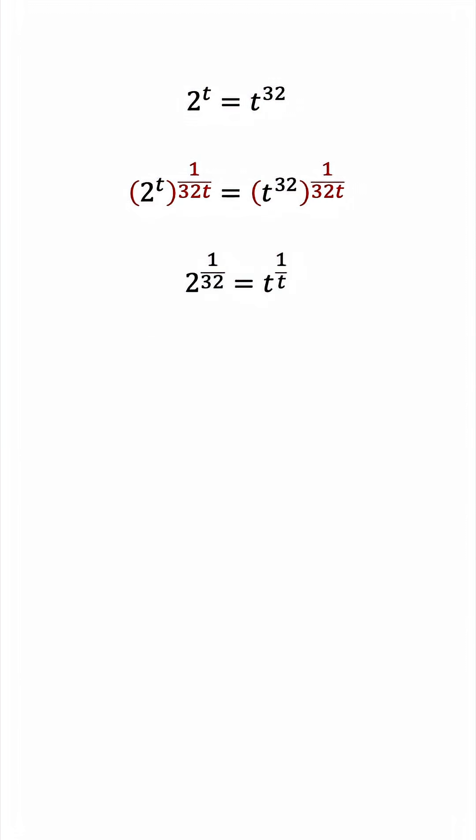And this gives us what we aimed for: x to the 1 over x equals some number. So if we can express that number as something to the power of 1 over itself, then x must be that number. Makes sense?